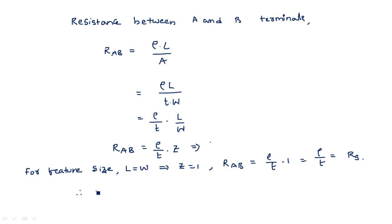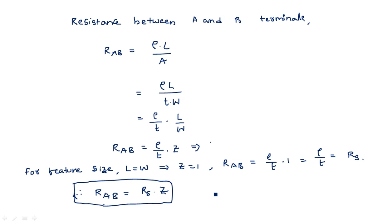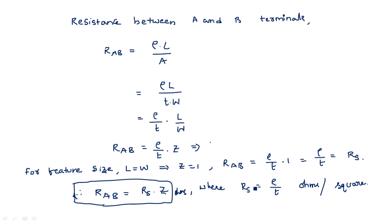Therefore resistance between the two terminals is R_AB = RS × Z. RS = ρ/T, measured in ohms per square. R_AB is measured in ohms, while RS is in ohms per square. 'Square' refers to a slab with dimensions L = W — a square cross-section — which is why the unit is ohms per square.